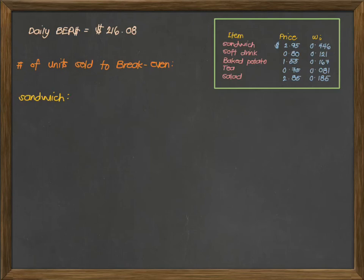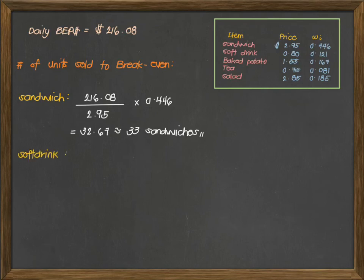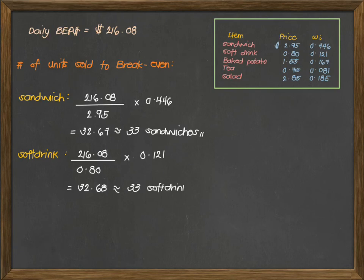The formula again is your daily break-even point divided by the price and we multiply by the weight. That's 216 divided by 2.95 times 0.446, which gives us an answer of 32.67 or rounded up to 33 sandwiches per day. Next, for the soft drink, that's 216.08 divided by 0.8 and then multiplied by 0.121 for the weight. This will give us an answer of 32.68 or roughly 33 soft drinks that should be sold every day.